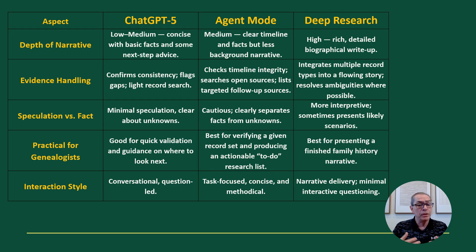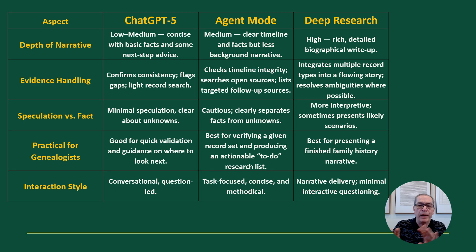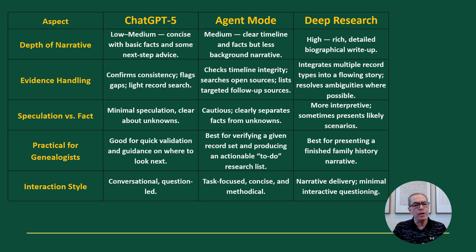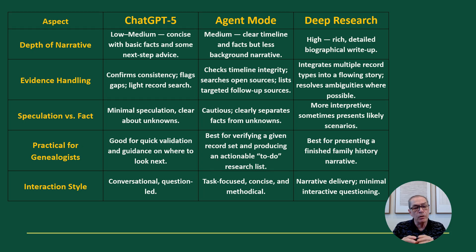How does this work for a genealogist? ChatGPT 5 is great for quick validation — if you're just building some people on the side of your tree it'll give you factors to go and find. Agent mode I would personally use more than deep research — it gives me lots of bullet points, and then once I've done my research I go to deep research to validate what I've done. In terms of interaction style: ChatGPT 5 is conversational; agent mode is in-between — task-focused and agentic but still conversational to some extent; and deep research is minimal interaction — once you set it off it keeps going with no way to stop it.